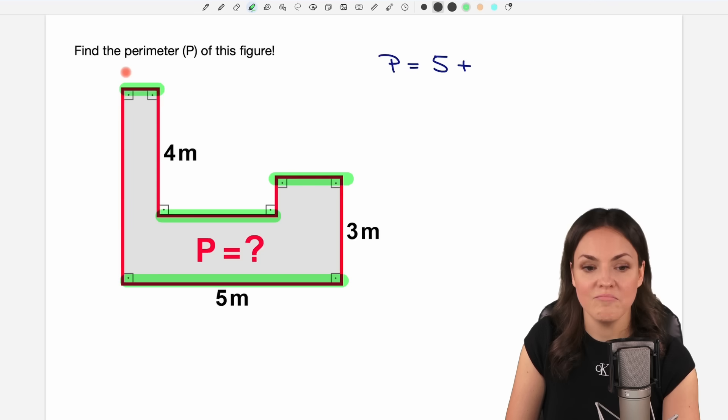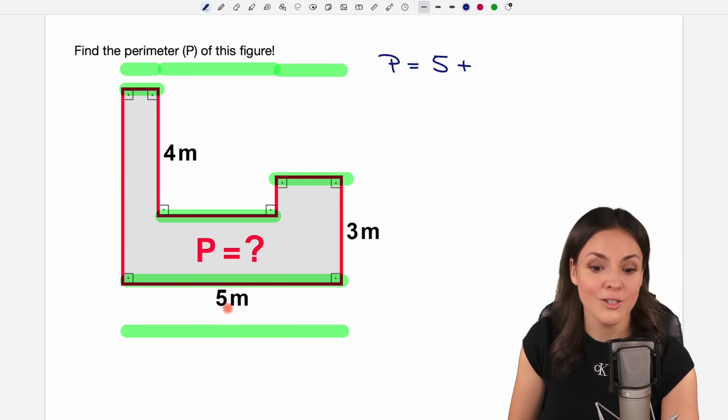we know that this side starts here and ends here. This side here starts at exactly the same point here and goes until here. And then the third side starts exactly here and goes until here. So if we take all of them together, it's just from the left to the right and we know that this is given with five meters.